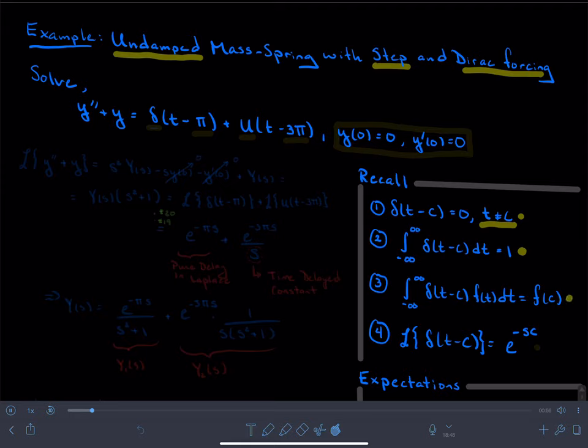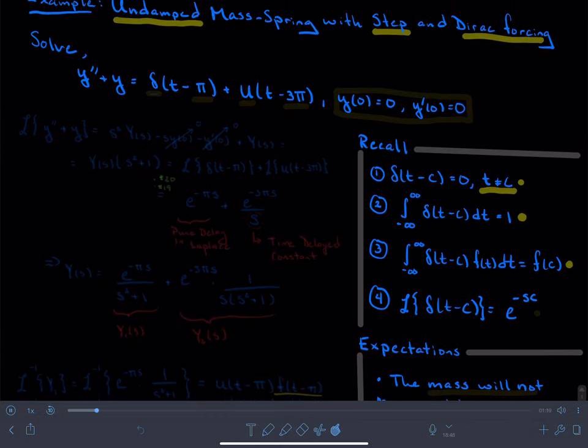Because of that, what this function is able to do is select one value of f out of the continuum of values for all sorts of different t's. It selects the one value associated with time t equals c.